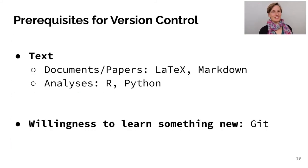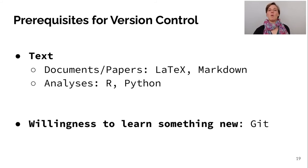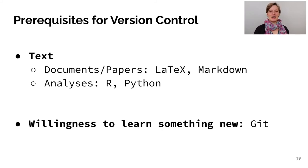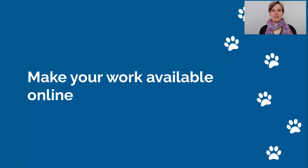What are the prerequisites for version control? As I said, use text-based formats: for documents and papers use LaTeX or Markdown, because Word is not text-based and doesn't work well with Git. For analyses, use scripts such as R and Python. And you need to be willing to learn something new, which is Git — I still highly recommend it because it's going to save you so much time in the future that it's definitely worth learning.